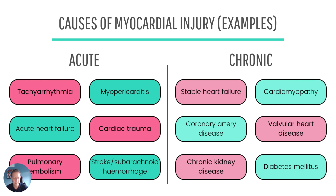Then there are chronic causes of myocardial injury — levels that are static and don't change over time. These include heart failure, cardiomyopathy, coronary artery disease with diffuse ischaemia, and valvular heart disease. Non-cardiac chronic causes include CKD — which we're all familiar with — and diabetes, which can cause a chronically elevated troponin. As you get older and accumulate more comorbidities and a higher cardiac risk factor burden, you can have a chronically elevated troponin at baseline.